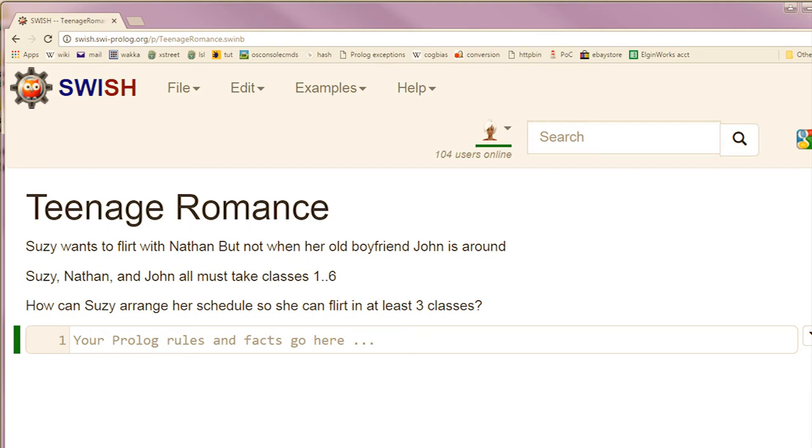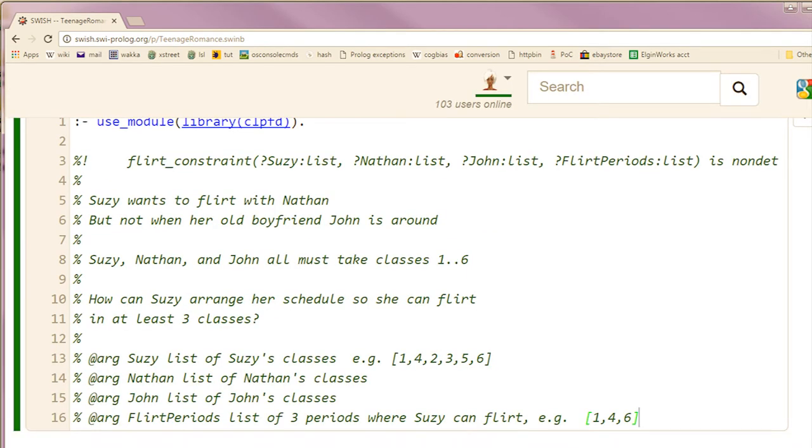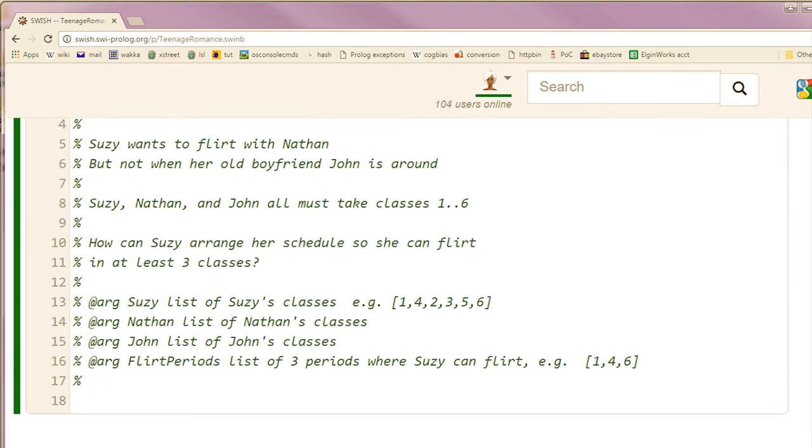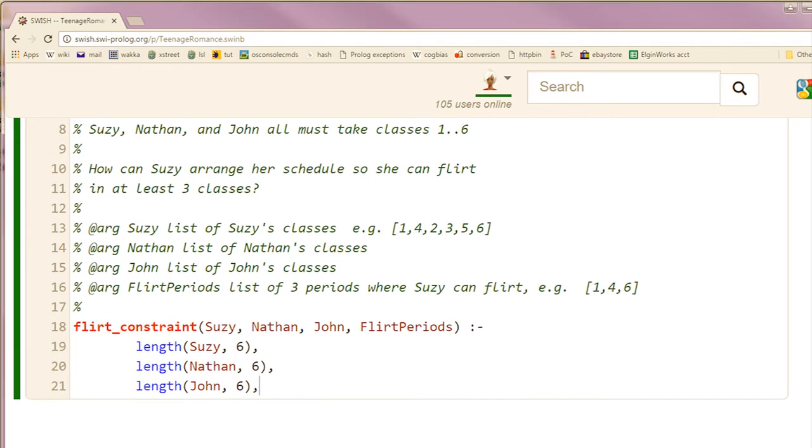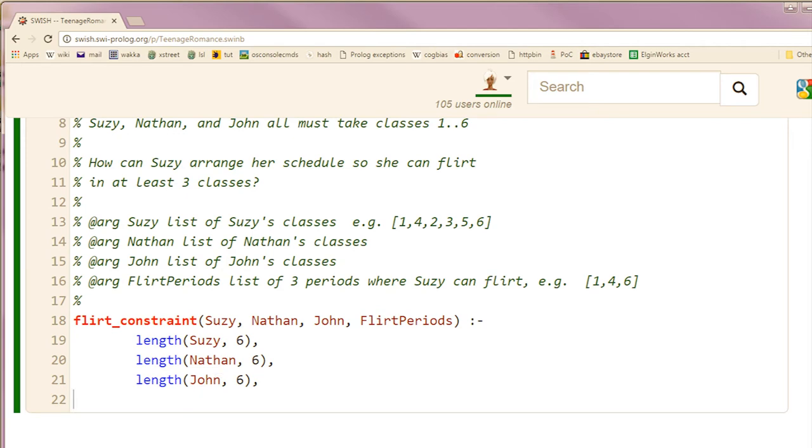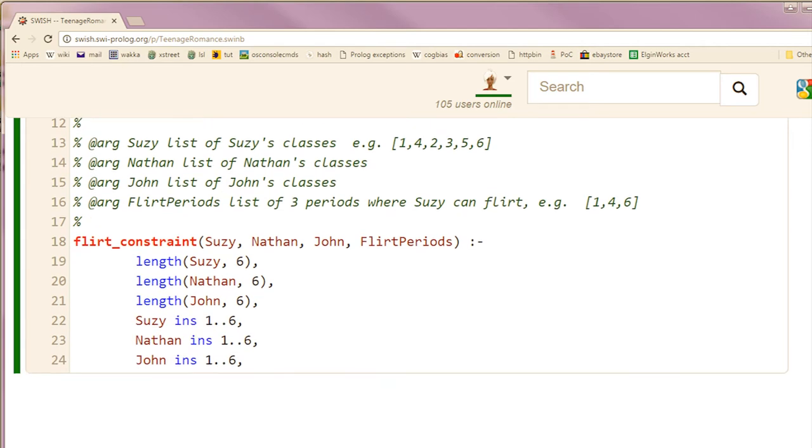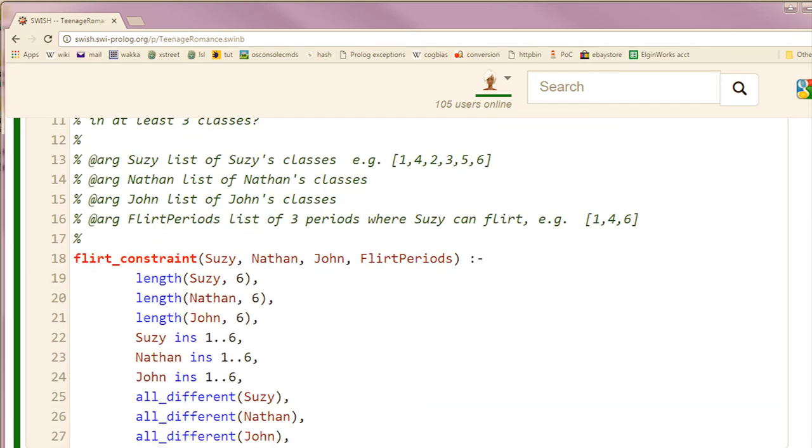This is a job for constraint programming. Like always, provide comments. Set up the rules of the problem. Each student goes to school for six periods, during which they must be in one of the classes numbered one through six, and they can't take the same class twice.